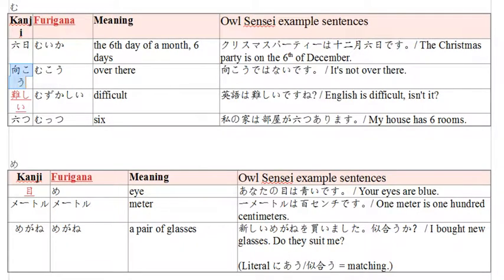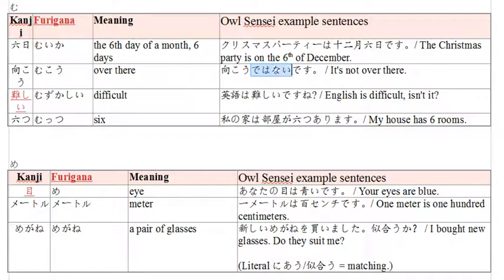Now we have mukou - mukou means over there. So we have: mukou de wa nai desu. Very easy - it's not over there. Mukou de means over there, de wa nai desu means is not. So mukou de wa nai desu: it's not over there, whatever we are looking for.